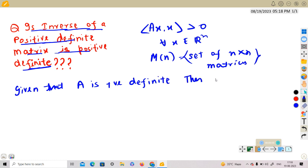Then from the definition of positive definite, <Ax, x> is greater than 0. Now consider <A^(-1)y, y>. To show this is positive definite, we need to show that this is greater than 0.